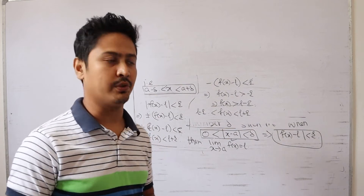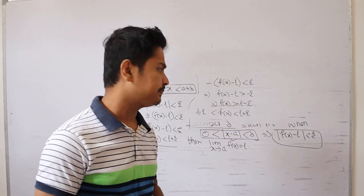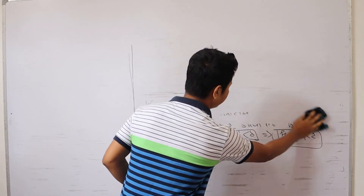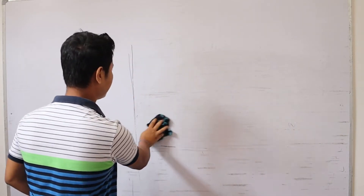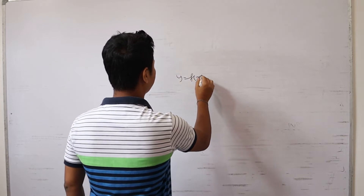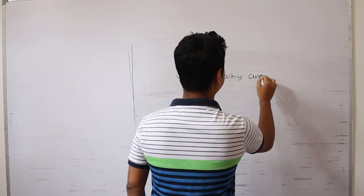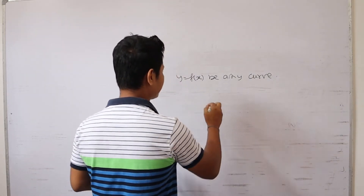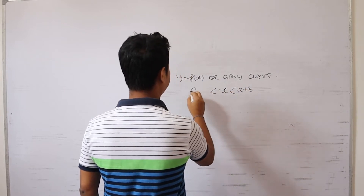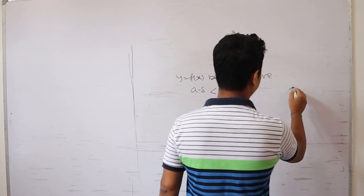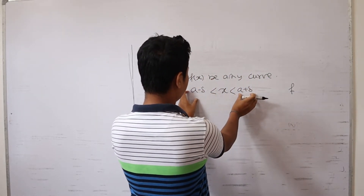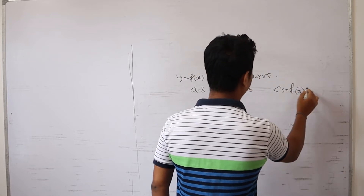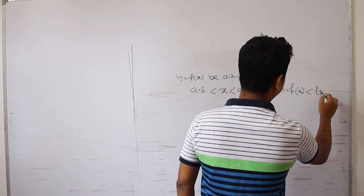I want to explain the geometrical interpretation. The limit of a function is required to be understood geometrically. So let y equals f of x be any curve. Here I will explain: x values are between a minus delta and a plus delta, and y equals f of x. This implies y values are between l minus epsilon and l plus epsilon.